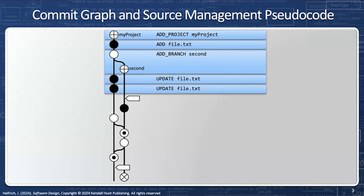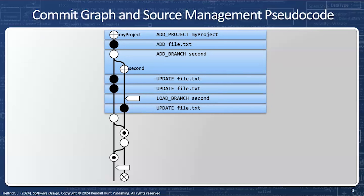So when I say 'update file', this will be on the root branch. But now I want to change over to the second branch, so I'm going to say 'load branch second' because that's the name of the second branch. Now any changes I make will be on the second branch — so I say 'update file', and that'll be on the second branch. Now I want to pull from my_project, and that'll be the two updates to file.txt. Observe that there's a little circle on the pull, which means I'm going to merge those two changes from the root branch to the one change on the second branch.